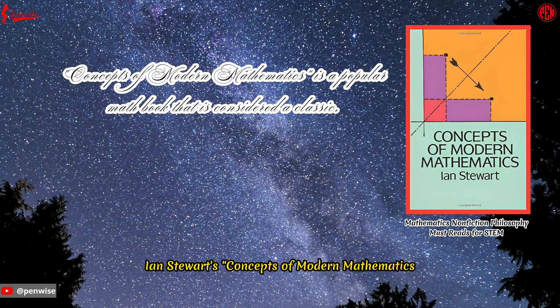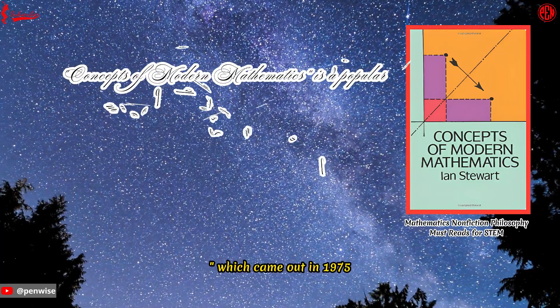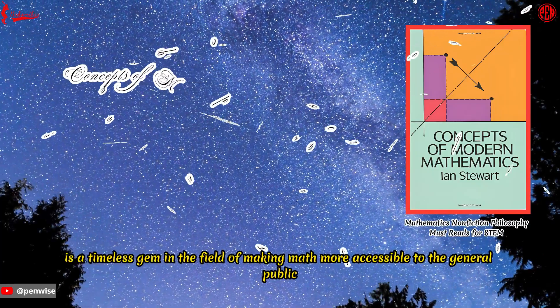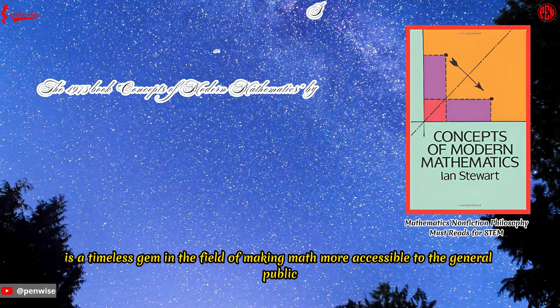Ian Stewart's Concepts of Modern Mathematics, which came out in 1975, is a timeless gem in the field of making math more accessible to the general public.